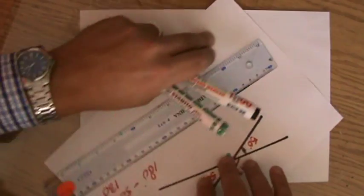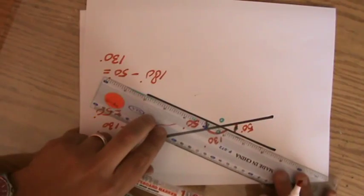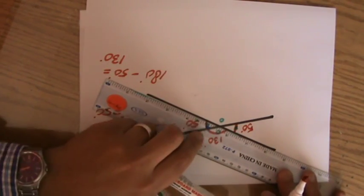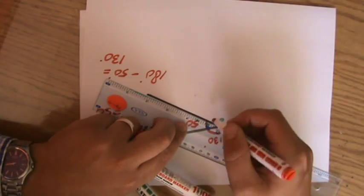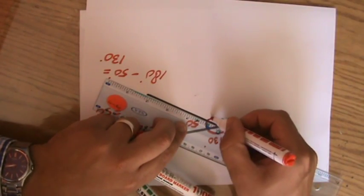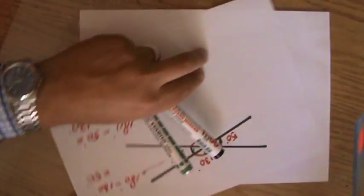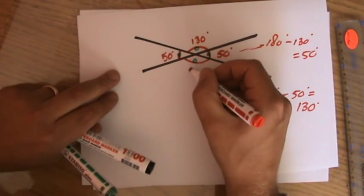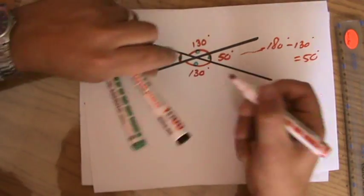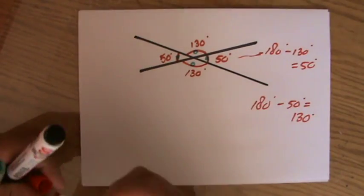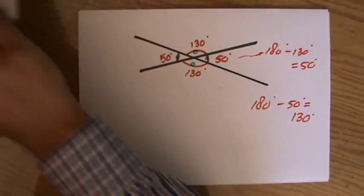But I can also, if I just turn it around, again, look at the straight line, which of course relates to a full turn, 180 degrees on the straight line. If that one is 50, then this one is 180 minus 50, so 130 again. And then you notice that also those two angles are vertically opposite and therefore equal.